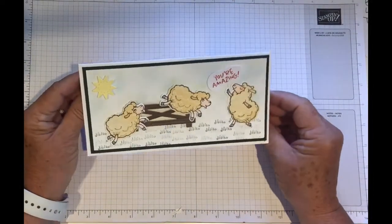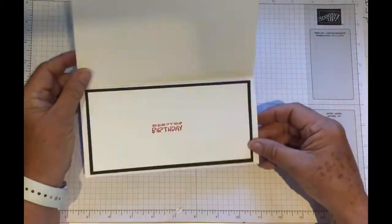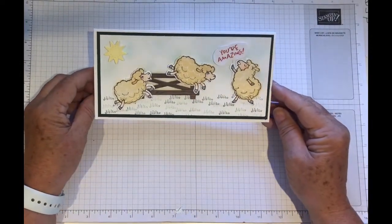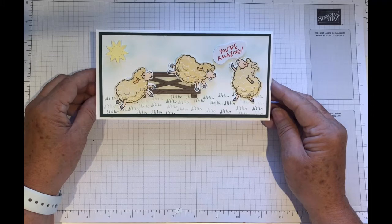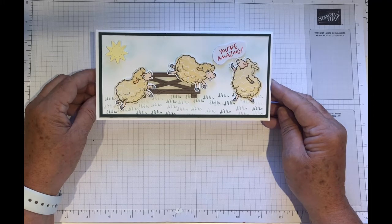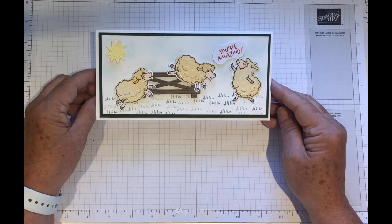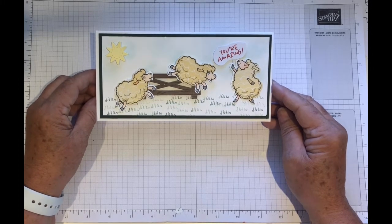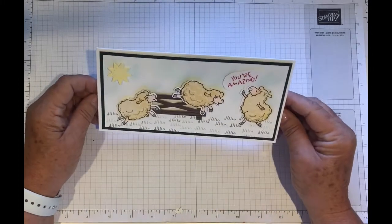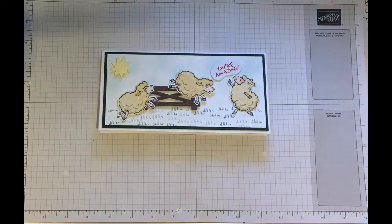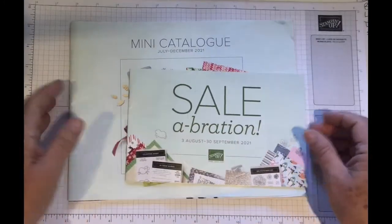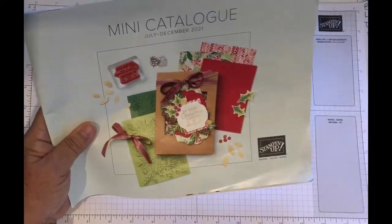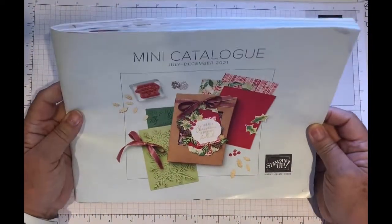Hi everyone, it's Carol here from thestampingground.co.uk and we're here today making a card using the Counting Sheep and the Sheep Dies from the Celebration Catalogue. At last, the day's arrived when we can actually order from the Mini Catalogue and the Celebration. So I'm just going to give you a quick look at the catalogues.